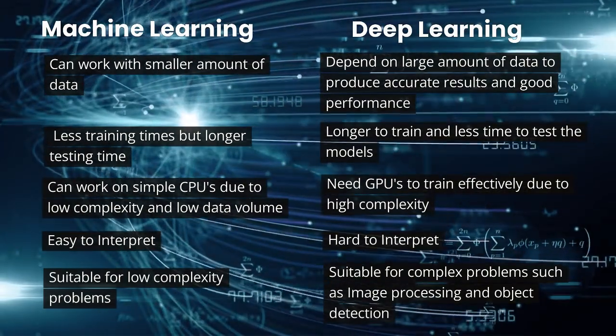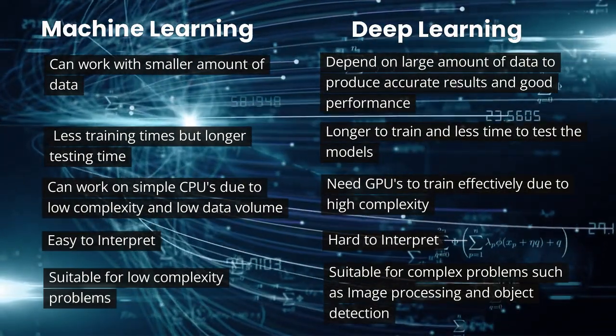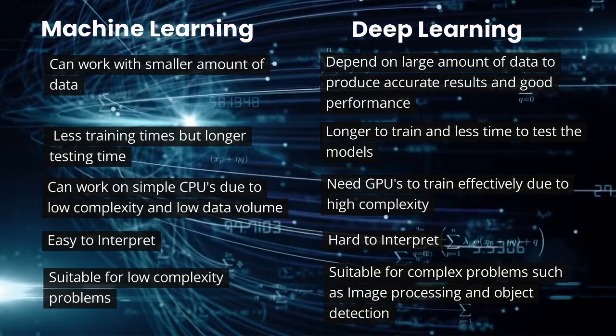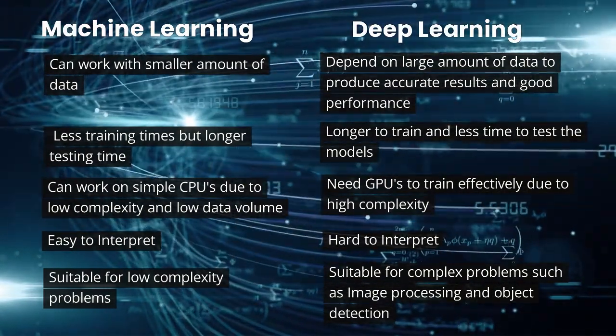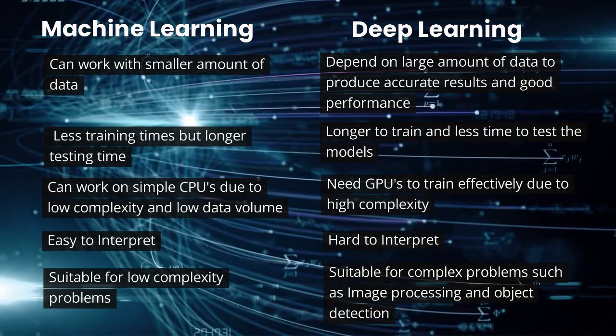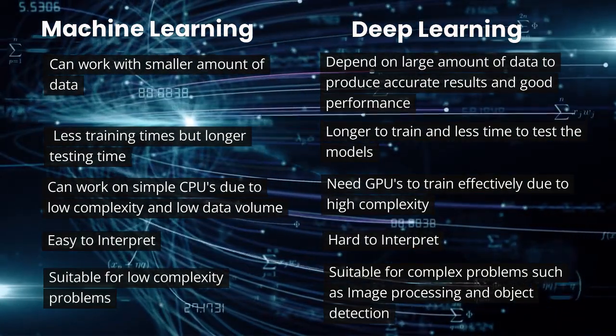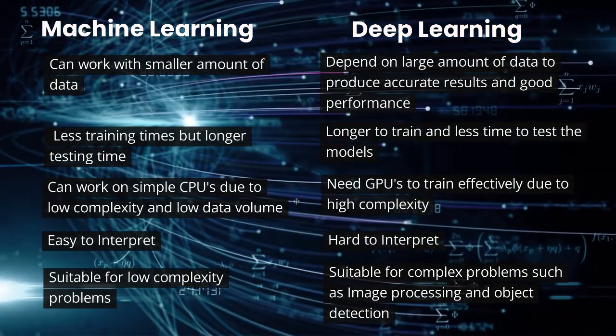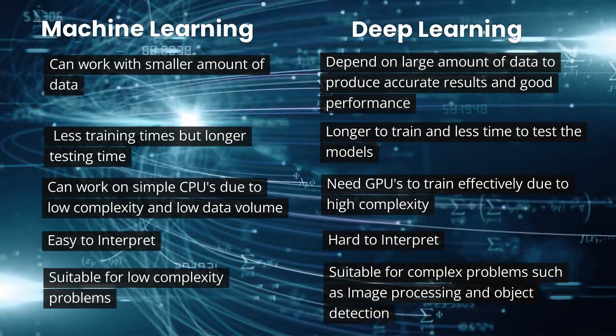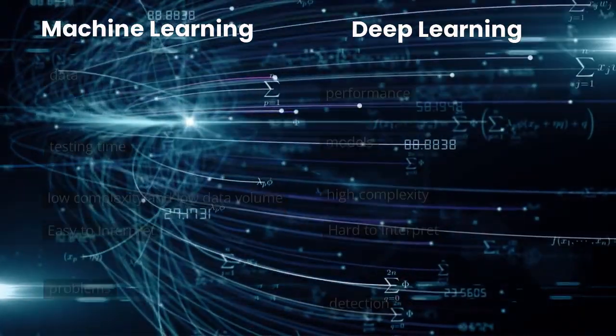Machine learning algorithms are suitable for low complexity problems, whereas deep learning is suitable for complex problems such as image processing and object detection.